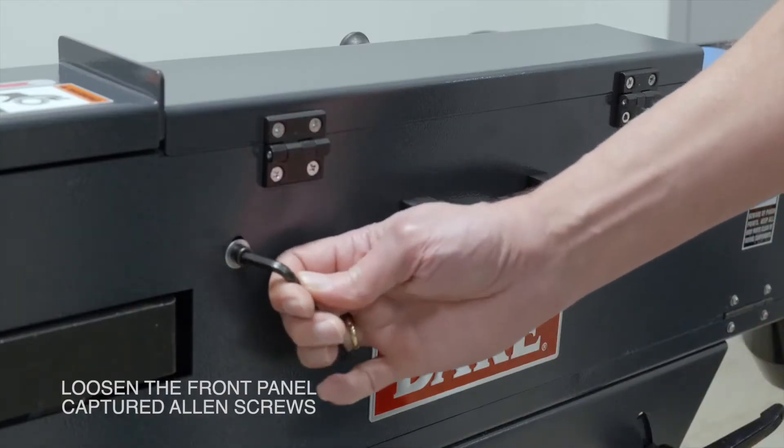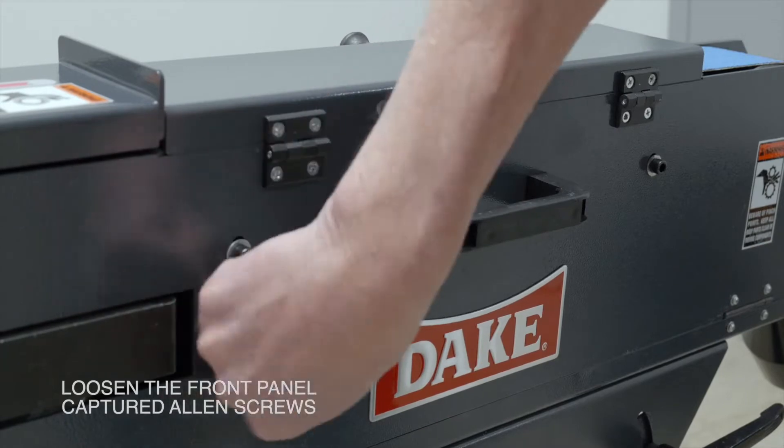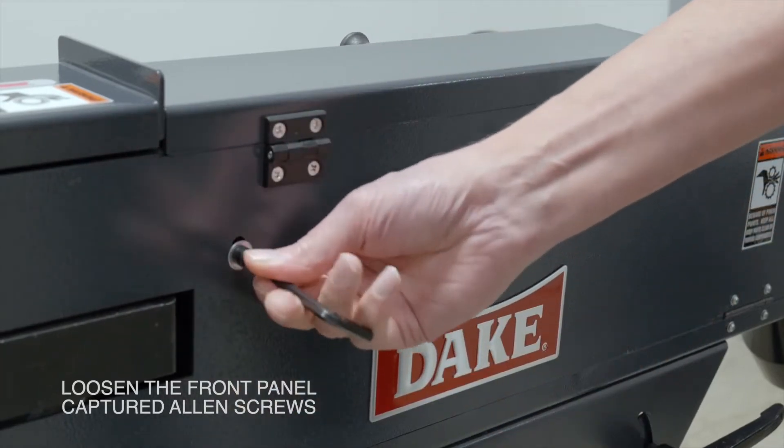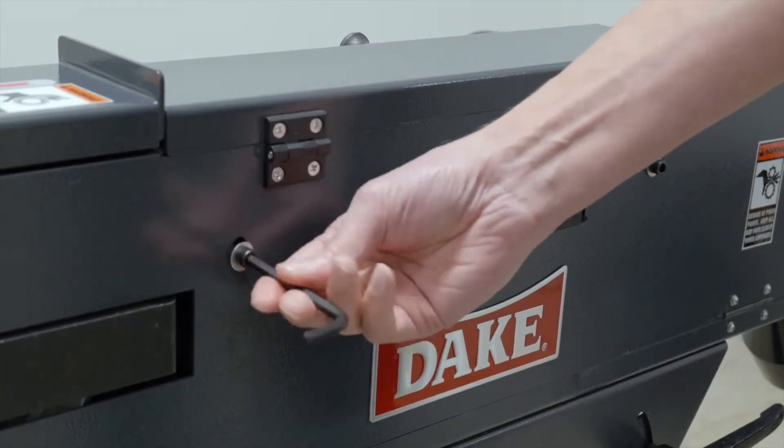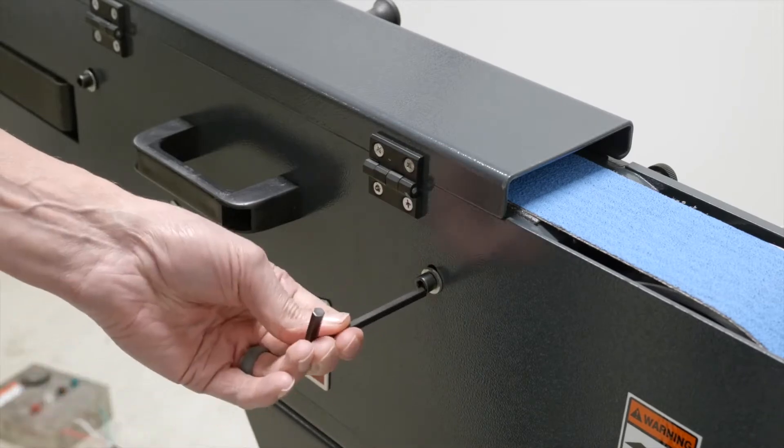The first step is to loosen the front panel captured Allen screws. And then next we'll remove the stock rest and the debris catch tray.